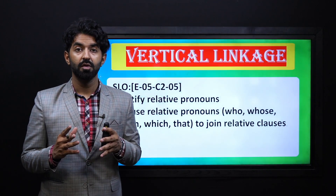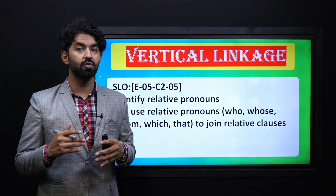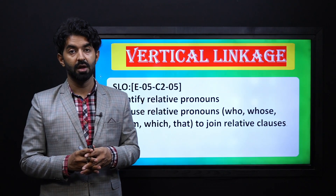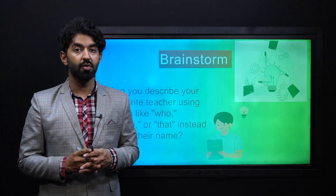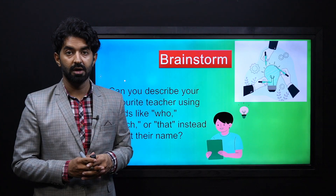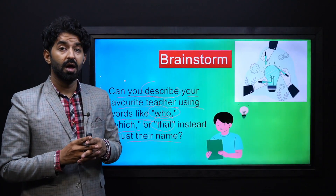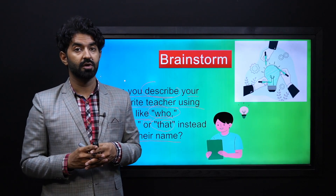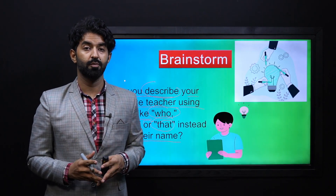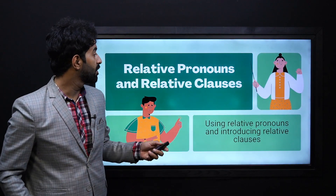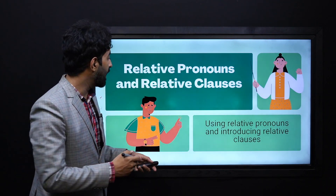Before starting the lecture, I'd like to introduce this vertical linkage with you and to remind you that you have covered this very well in the previous grade. You can recall the concept because we are going to do a very interesting brainstorming activity. The prompt is: can you describe your favorite teacher using words like who, which, or that instead of just their name? Do this quick brainstorming activity, come back, and then we will be dealing with our topic of relative pronouns and relative clauses.